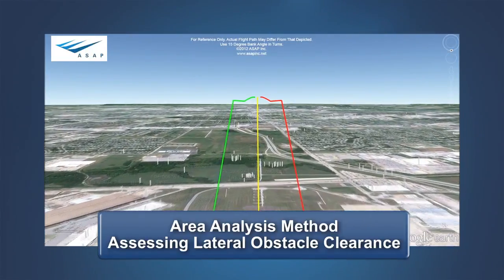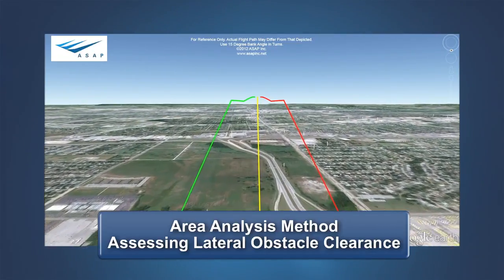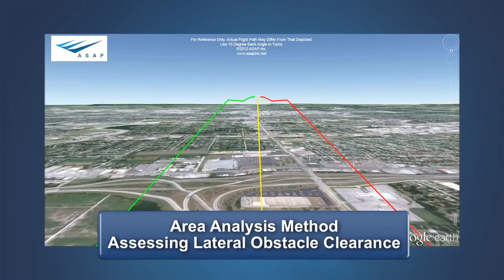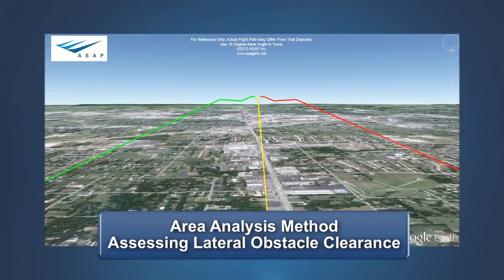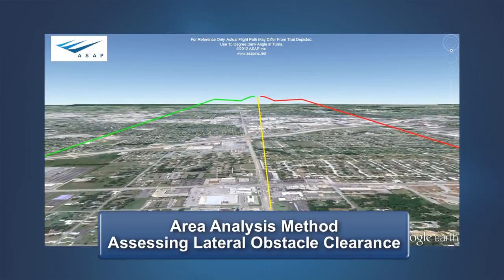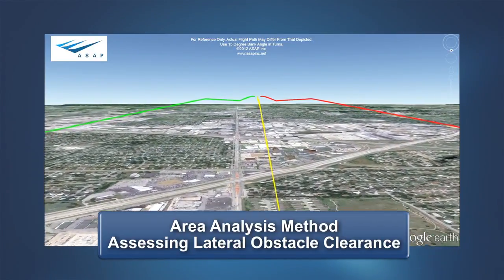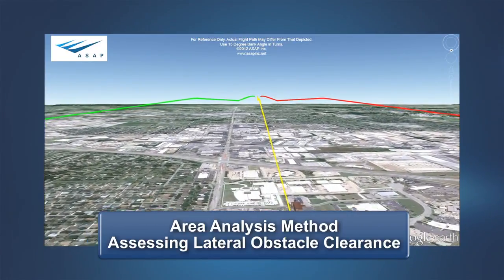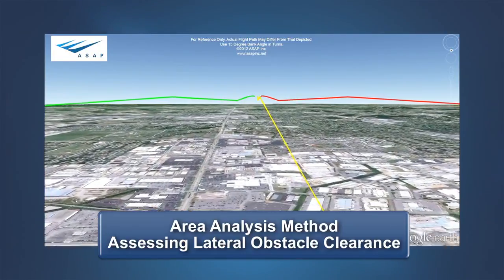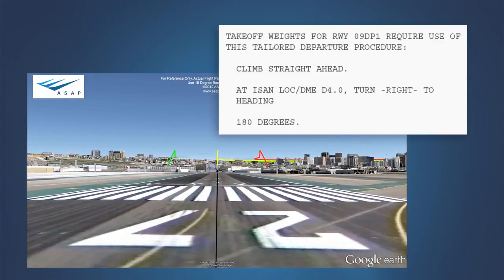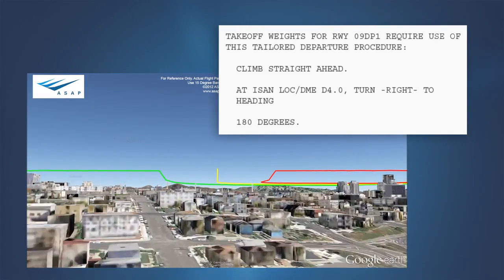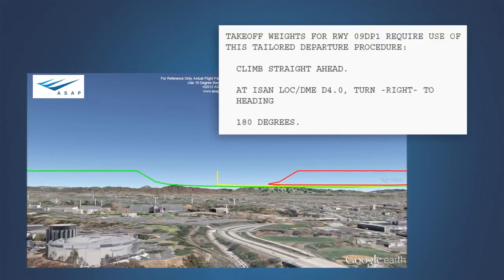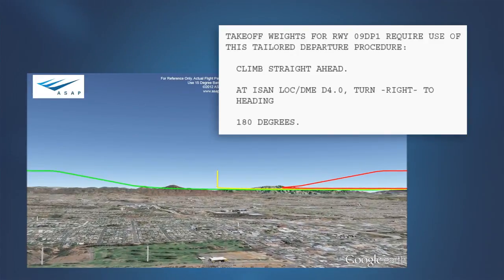The AC provides methods that account for factors affecting the actual ground track relative to the intended ground track, such as wind and available course guidance. This is accomplished by using an obstacle accountability area within which all obstacles must be cleared vertically by the net takeoff flight path. For an engine failure procedure centered on the extended runway centerline, this area begins at the runway end and expands at a predefined rate until it is at a maximum width of 2,000 feet either side of the intended track. For some runways, a straight-out engine failure procedure may not be possible, and a special engine failure procedure may be provided that takes the flight path away from the terrain or obstacles limiting the allowable takeoff weight.